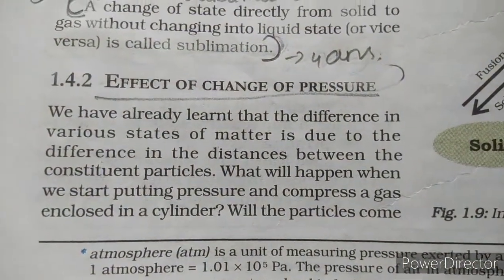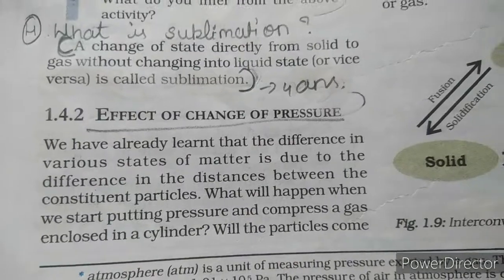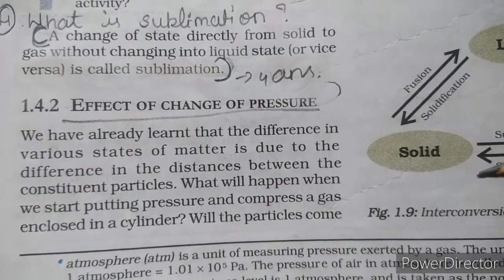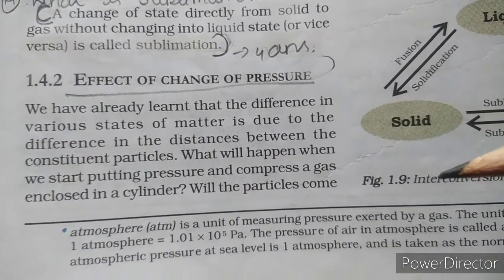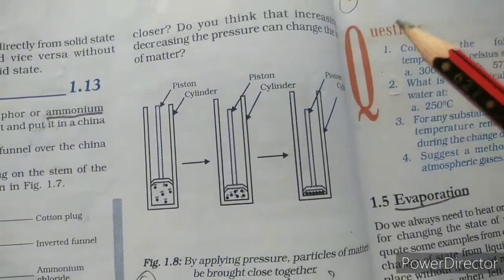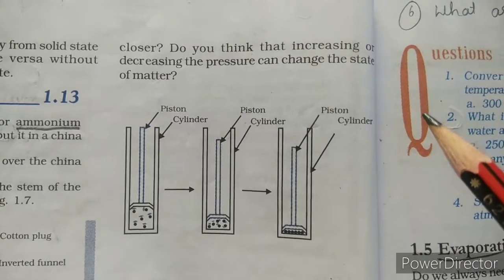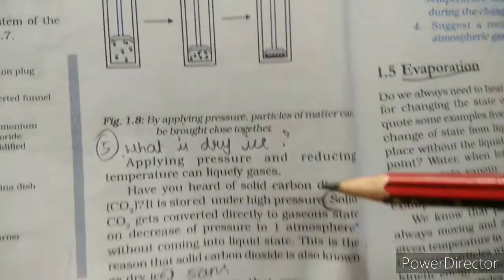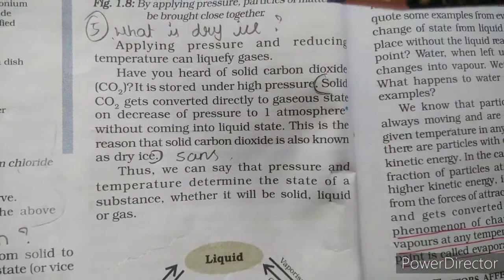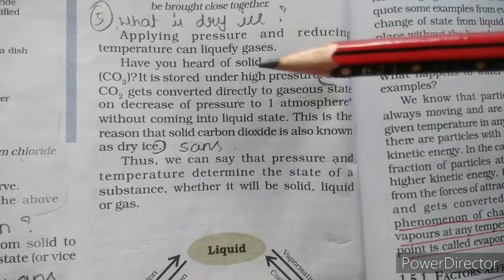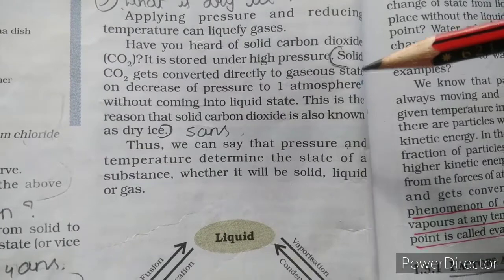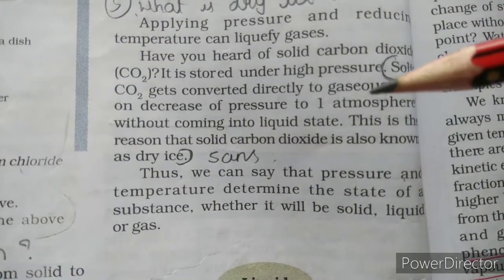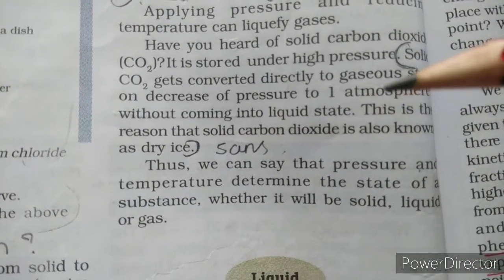Effect of change of pressure: The difference in various states of matter is due to the difference in distances between constituent particles. When we apply pressure and compress a gas in a cylinder, the particles come closer. Applying pressure and reducing temperature can liquefy gases. Solid carbon dioxide (dry ice) is stored under high pressure and gets converted directly to gaseous state on decrease of pressure to one atmosphere, without coming into liquid state.